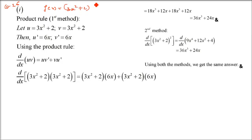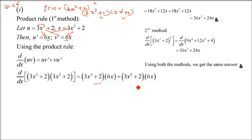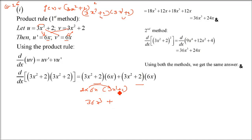For part (a), f(x) = (3x² + 2)². For the product rule, we write it as u = (3x² + 2) and v = (3x² + 2). Then u' = 6x and v' = 6x. Applying the product rule: d/dx = u·v' + v·u' = 2·(3x² + 2)·6x = 12x(3x² + 2) = 36x³ + 24x.